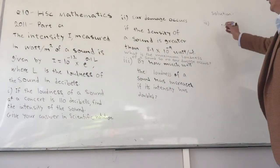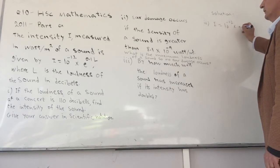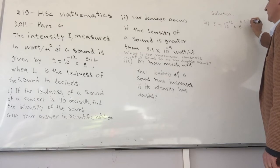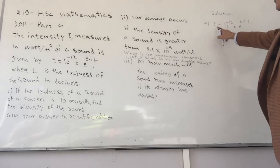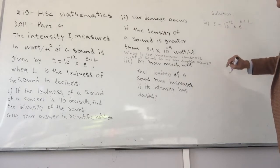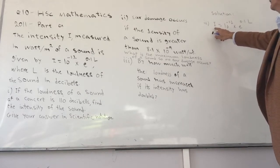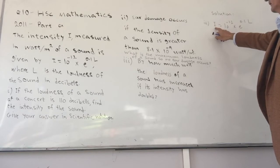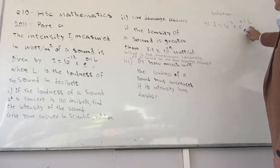Basically, again the formula we have is I equals 10 to the minus 12 times e to the power of 0.1L. That is the intensity and L is loudness. They say that the intensity has doubled. So we can write it as 2I and then see what happens to L.